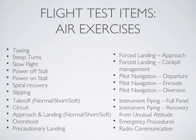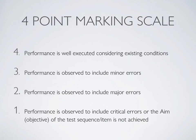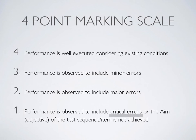Before we move on, let's briefly discuss the marking scale. Your air exercises will be graded on a four-point scale, with four being the highest mark and one being the lowest. To receive a one, performance of the item is observed to include a critical error, or the aim of the flight test item is not achieved. Let's look at why an exercise might be graded a one, as provided in the PPL flight test guide.